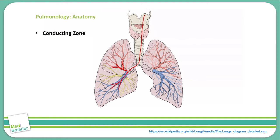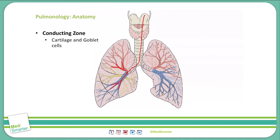The conducting zone is made up of several different types of cells. First, cartilage and goblet cells extend from the beginning of the respiratory tract down to the end of the bronchi.